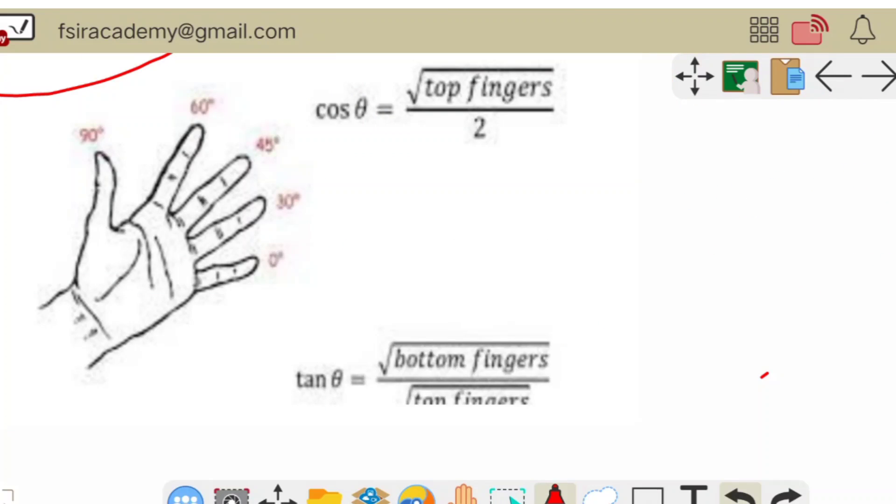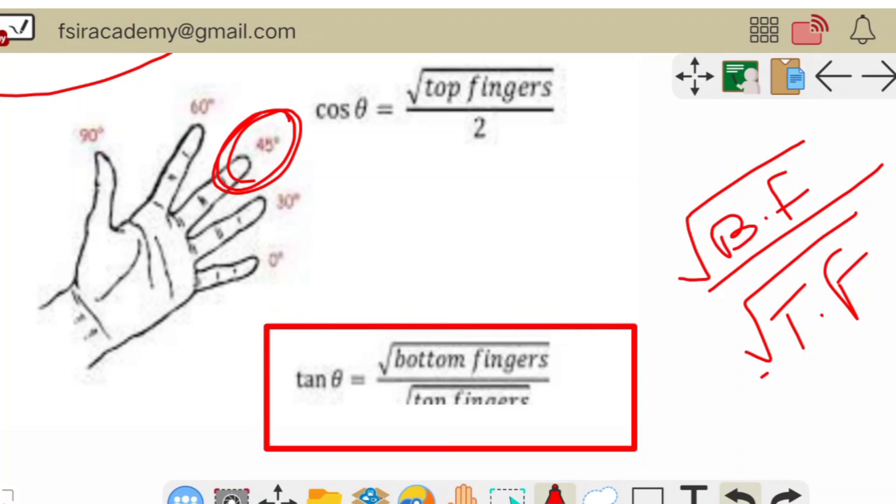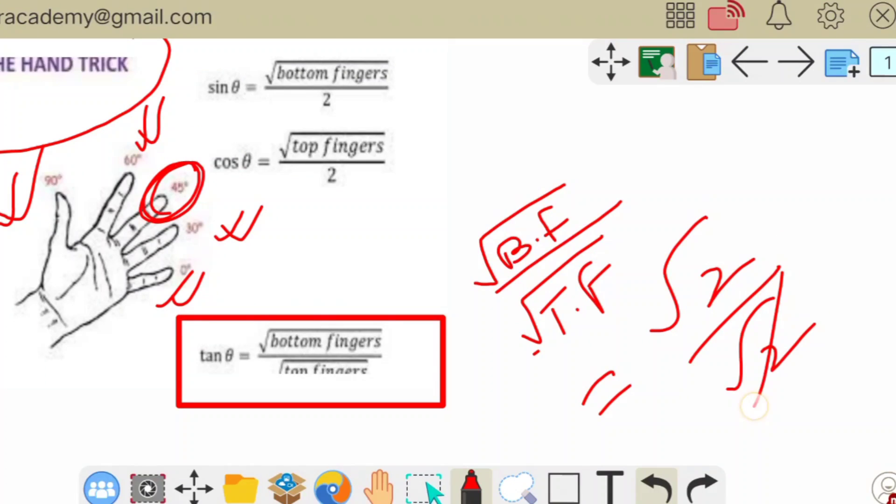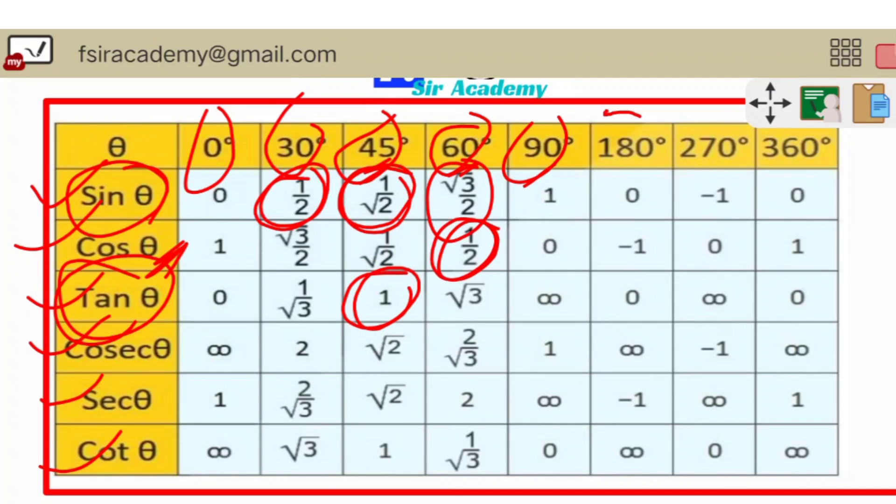Now we can move forward for the table of tangent. Now we have to find out any angle of tangent. We will find tangent 45 degree. Tangent 45 degree formula: root of bottom finger divided by root of top finger. We have to find out the value of tangent 45 degree. Top has two fingers, bottom has two fingers. Root two on top, root two on bottom. If we cancel, tangent 45 degree equal to one. If we will get the value of sine, cosine, tangent, it is very easy for us to find out the remaining three ratios.